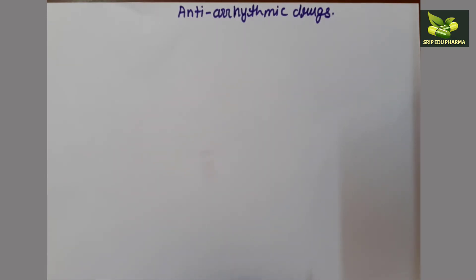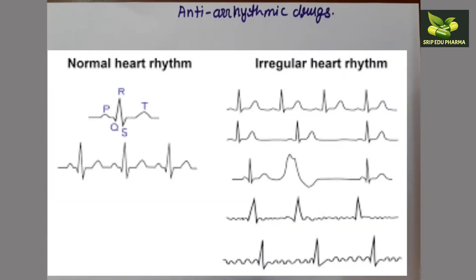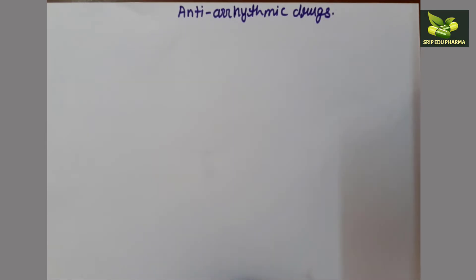So there is an abnormality in the heart rate. As we know, the normal heart rate is 72 beats per minute. If the heart rate is below 72 beats per minute, that is called hypo-arrhythmia. And if it is more than 72 beats per minute, that is called hyper-arrhythmia. The drug taken for treatment of arrhythmia is called antiarrhythmic drugs, and this drug is used for treatment of hyperarrhythmia — when the heart rate is more than 72 beats per minute for a long period of time.